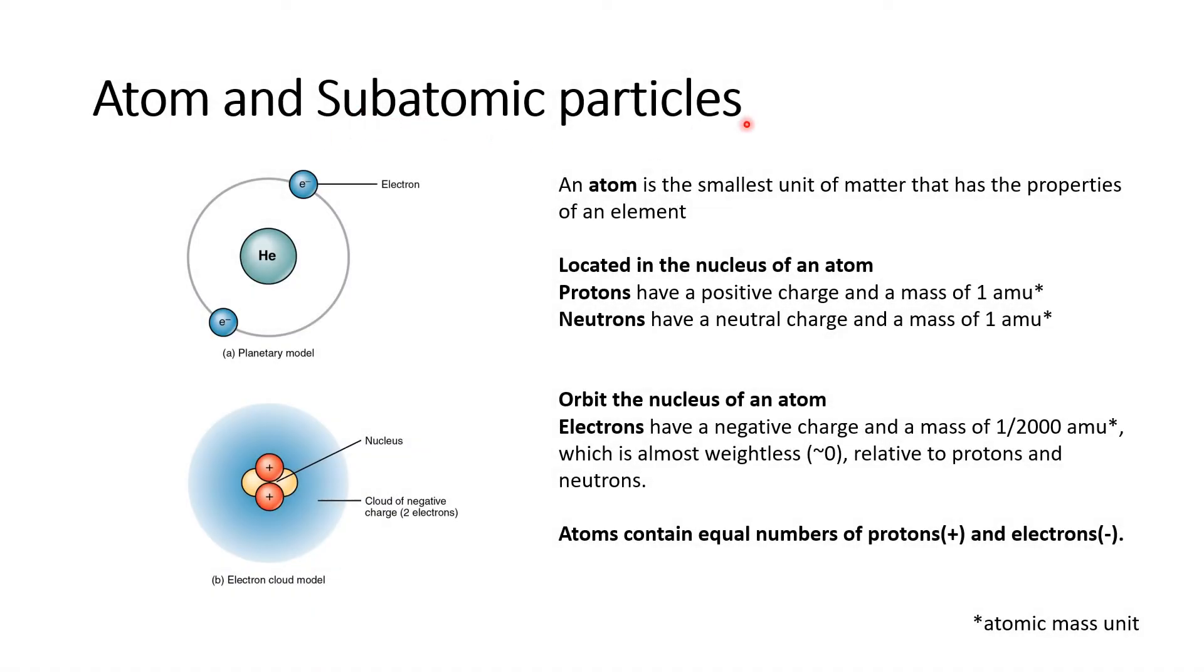Atoms have subatomic particles. Here's an illustration of an atom. We can see it has a center core that we call the nucleus. Around the nucleus we have particles that fly around in these orbits. We call them orbitals or energy levels.